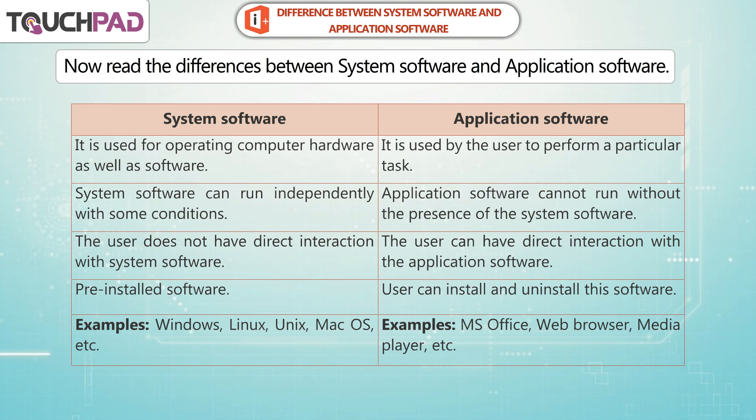Examples of System Software include Windows, Linux, Unix, Mac OS, etc. Examples of Application Software include MS Office, Web Browser, Media Player, etc.